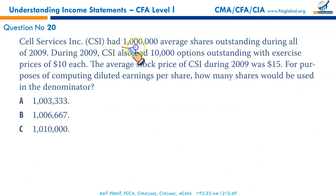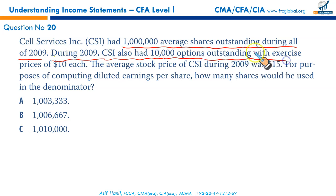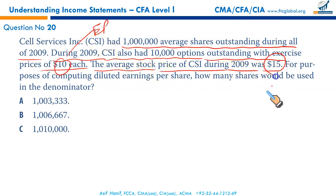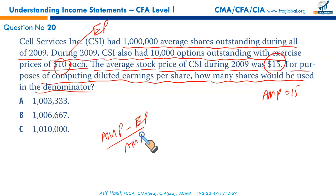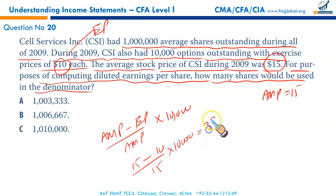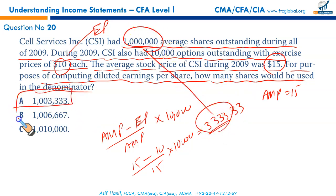Cell Services Inc. had 1 million average shares outstanding. There are 10,000 options outstanding with exercise price $10 and average market price $15. Using the treasury stock method: (15−10)/15 × 10,000 = 3,333 additional shares (rounded down). For diluted EPS, the denominator = 1,000,000 + 3,333 = 1,003,333 shares. That makes A the correct option.